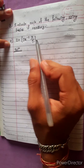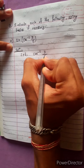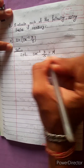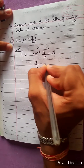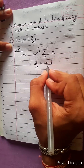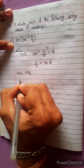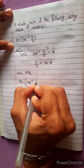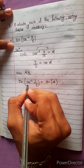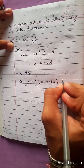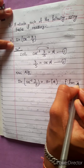Evaluate each of the following using tables if necessary. Let cos inverse 3 by 5 equals A, so cos A equals 3 by 5. According to the question, we have sine of cos inverse 3 by 5, which is now sine A — because cos inverse 3 by 5 is A, as we got from equation 1.